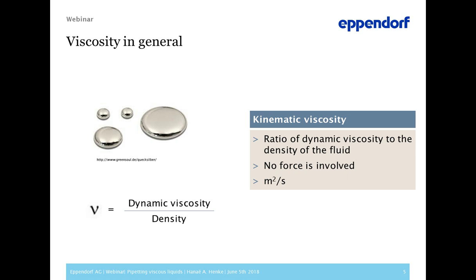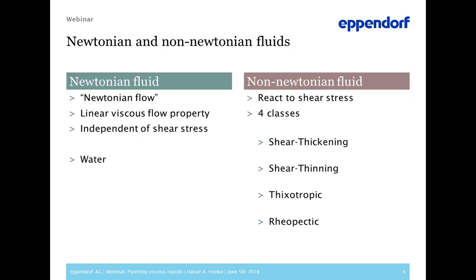I will use Newtonian fluids as examples because they are more predictable. Viscous fluids can be further categorized into two categories: Newtonian and non-Newtonian fluids. A Newtonian fluid has a linear flow property and its viscosity is independent of shear stress — for example, water. No matter how much pressure is applied to water, its flow behavior does not change. In contrast, non-Newtonian fluids react to shear stress and can be categorized in four classes: shear thickening, shear thinning, rheopectic, and thixotropic. Let's have a closer look at these classes.